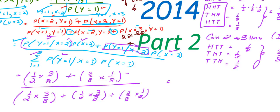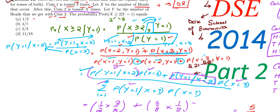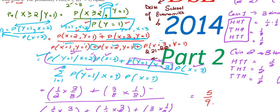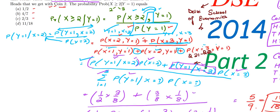Solving these, the answer comes out to 5/9, which can also be written as 10/18. Checking the options, we see the answer is 10/18. It appears option D has a printing mistake — it should be 10/18, not 11/18. Our calculation is correct and the answer is option D. I'll end this video here; solutions to further questions will be in our next videos.